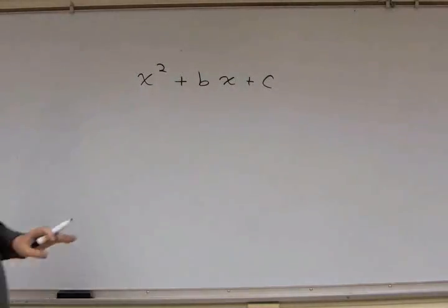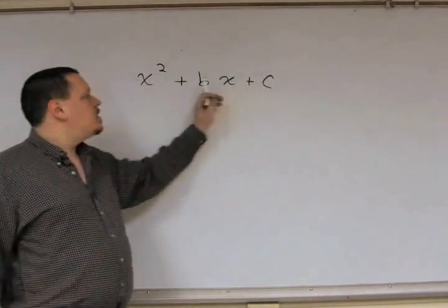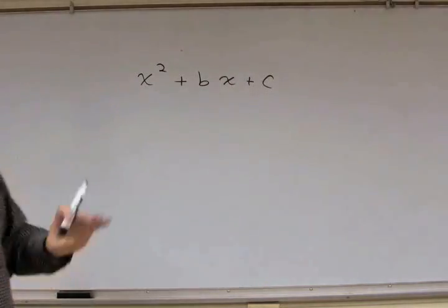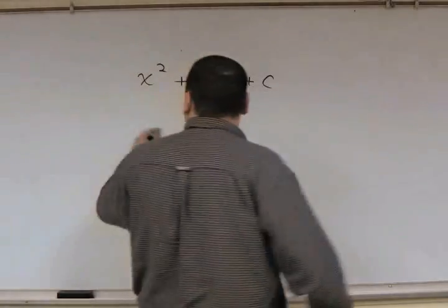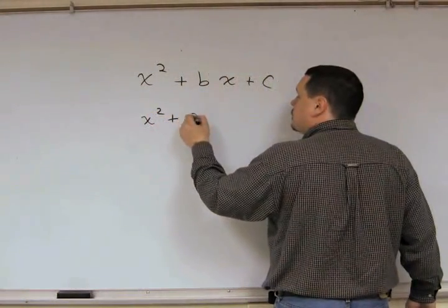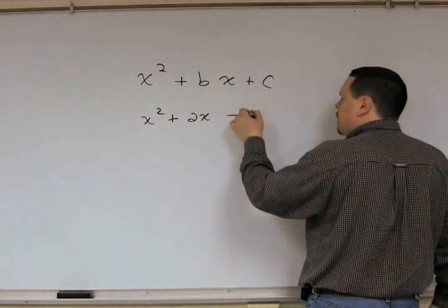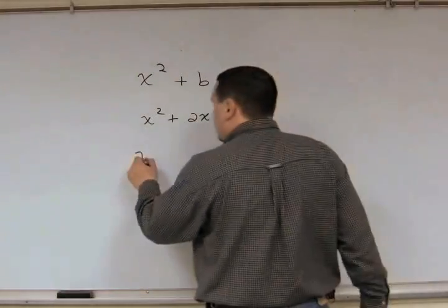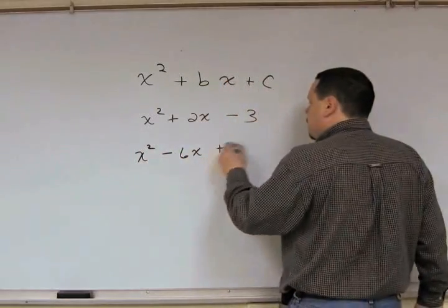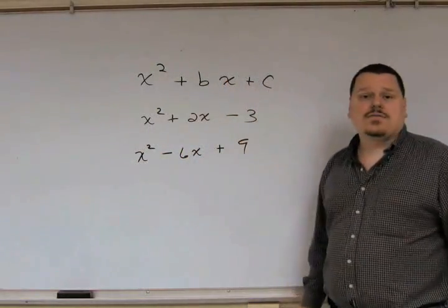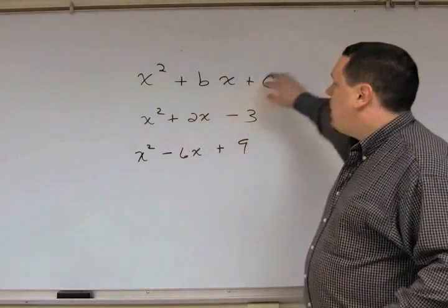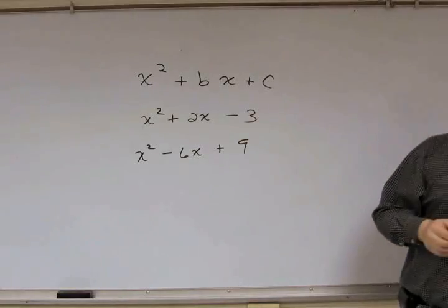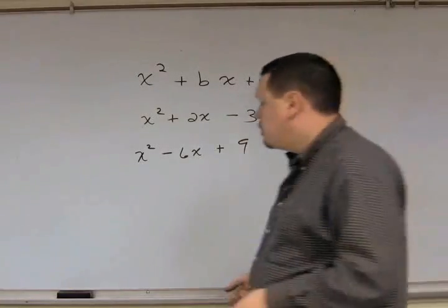Notice here I have the sum, you have plus bx and plus c. Now, there's nothing stopping us from having c being negative. You could have x squared plus 2x minus 3. c is negative, b is positive. You could also have b being negative, x squared minus 6x plus 9. Again, both being negative if you wanted to. When we write x squared plus bx plus c, we are looking at that b and or c could be positive or they could be negative or a mixture.